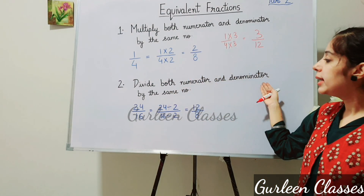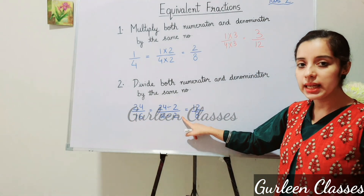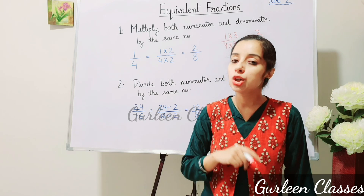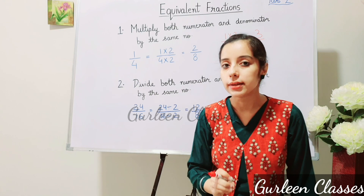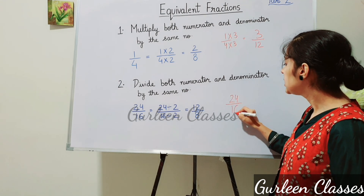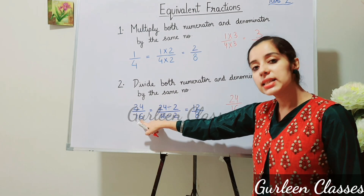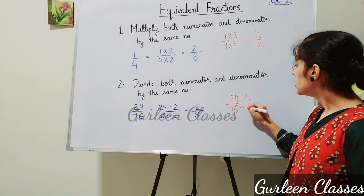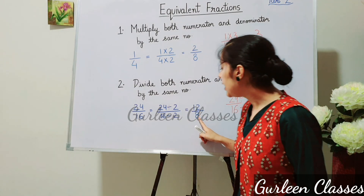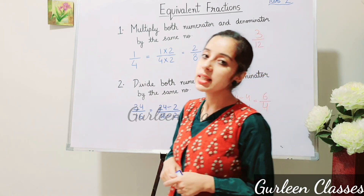Now, dividing to find equivalent fractions: take 24/16. Dividing by 2 gives 12/8. Whenever you are dividing, it should be divisible by both numerator and denominator. For another equivalent fraction, I cannot divide by 3 because 3 does not divide 16. So I divide by 4: 24÷4 = 6 and 16÷4 = 4, giving 6/4. So 12/8 and 6/4 are equivalent fractions of 24/16. I hope equivalent fractions are clear.